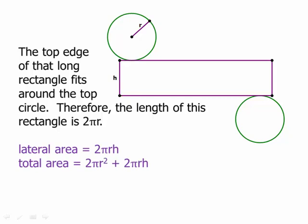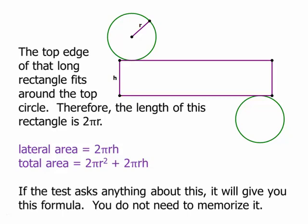Add the two circles, we get 2 pi r squared plus 2 pi r h. So the test does not expect you to know this. You do not have to memorize that, but the test may ask about it. They'll give you that formula. It is good to understand where that formula comes from. And so it's just good to be familiar with this in case the test hands it to you.